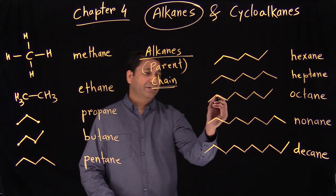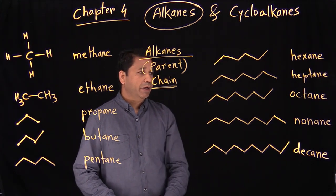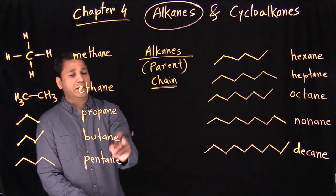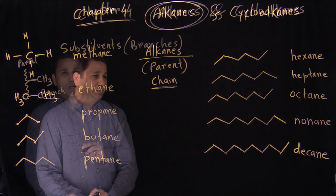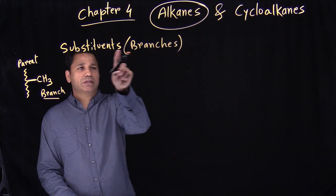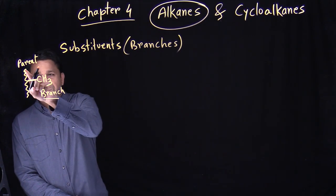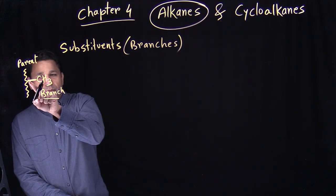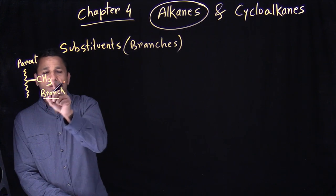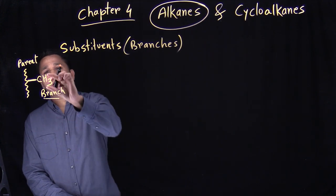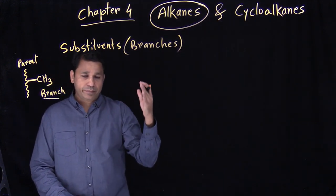Some of the alkanes you already know — such as octane. You might have seen it at a gas station where it says octane value, meaning your gas has octane in it. You might have seen butane and propane — that's your barbecue gas, the gas tank you buy. So next part is substituents — what kind of substituents we can have. Those are the branches that attach to the parent chain.